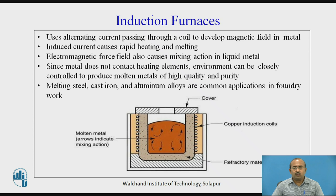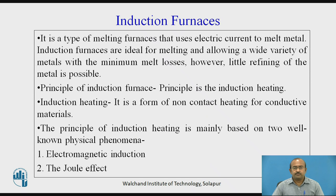Molten metal is shown, with arrows indicating the mixing action. A cover and refractory material enclosing the molten metal are shown, and copper induction coils are wound around the refractory material. Induction furnaces are ideal for melting and alloying a wide variety of metals with minimum melt losses; however, little refining of the metal is possible.